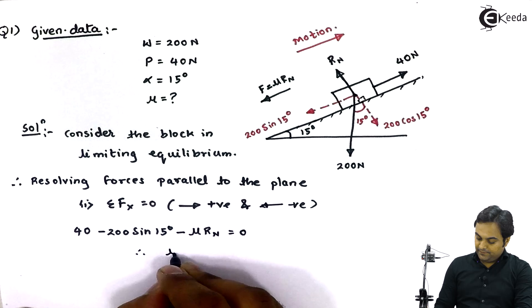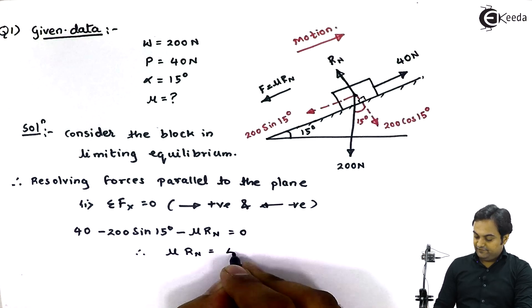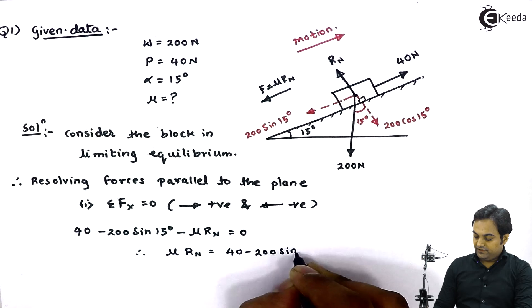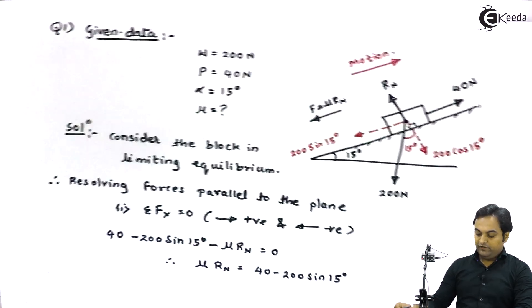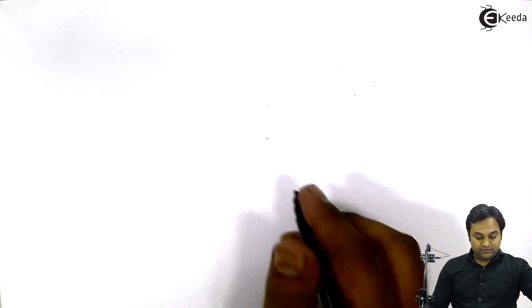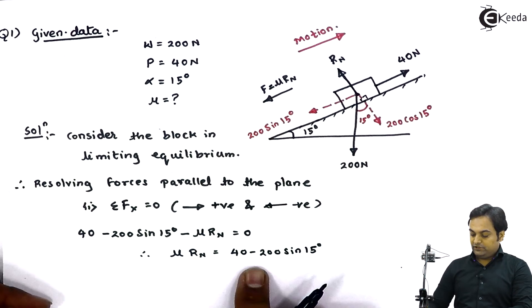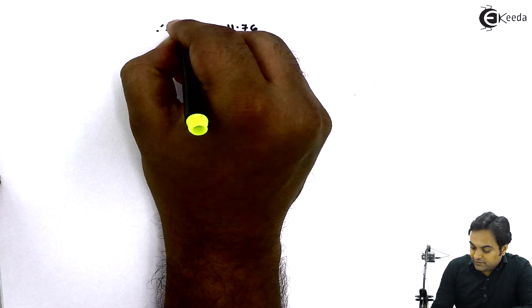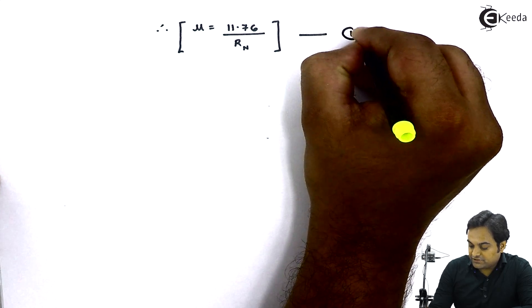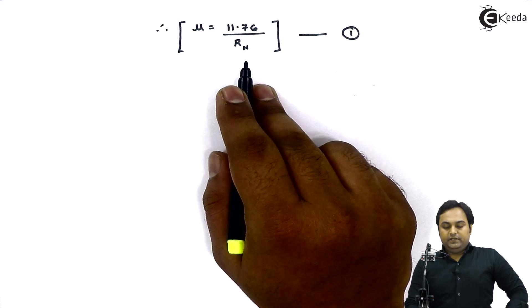Therefore: 40 minus 200 sin 15 minus mu times R_n equals zero. Rearranging, mu times R_n equals 40 minus 200 sin 15, which comes out to be 11.76. So mu equals 11.76 divided by R_n. This is equation number one — once we get the value of normal reaction R_n, we substitute it here to find mu.